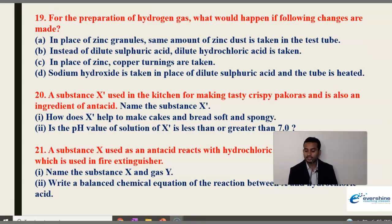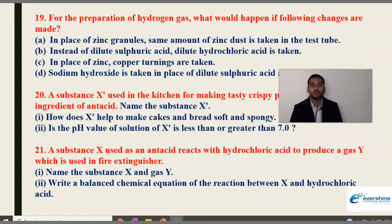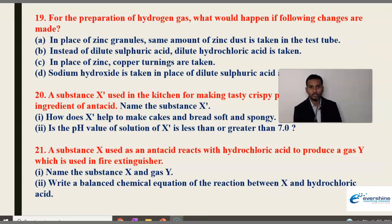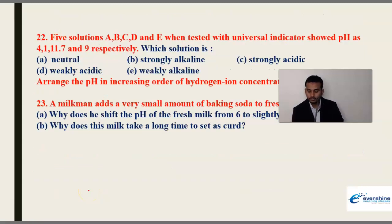Next: A substance X used in the kitchen for making tasty crispy pakoras is also an ingredient of antacid. Name the substance X, how does X help to make cakes and bread soft and spongy, and is the pH value of X less than or greater than 7? After that: A substance X used as an antacid reacts with hydrochloric acid to produce a gas Y used in fire extinguishers. Name the substance X and gas Y, and write the balanced chemical reaction between X and hydrochloric acid.